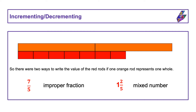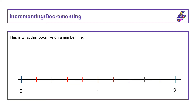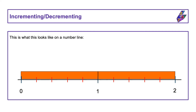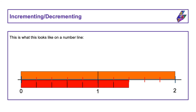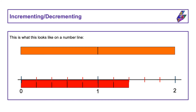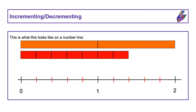Although these numerals look different, they represent the same quantity and are in the same position on a number line. The orange rod has a value of one, so two orange rods have a value of two. We can label the number line incrementing in units of one-fifths using improper fractions when the fraction is greater than one: zero-fifths, one-fifth, two-fifths, three-fifths, four-fifths, five-fifths, six-fifths, seven-fifths, eight-fifths, nine-fifths, ten-fifths.